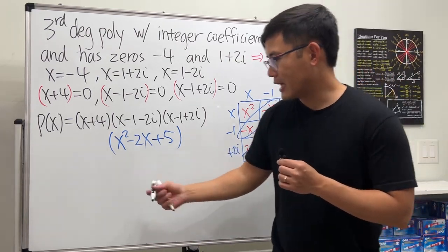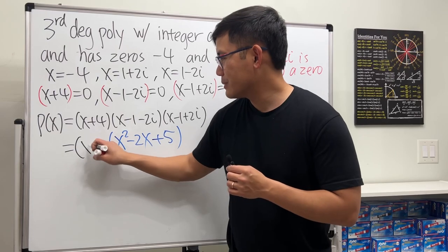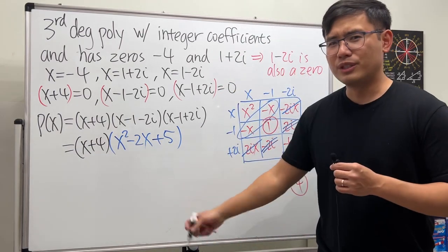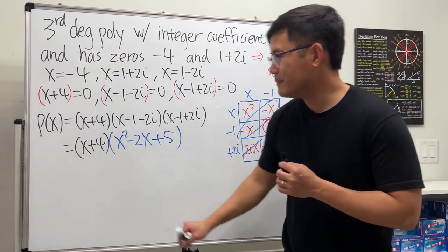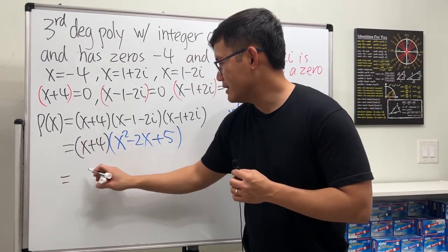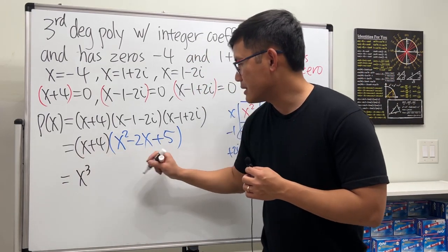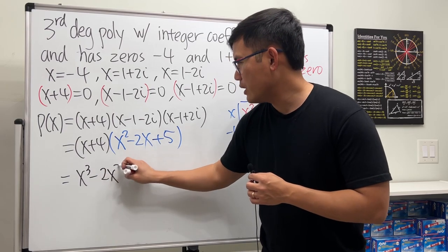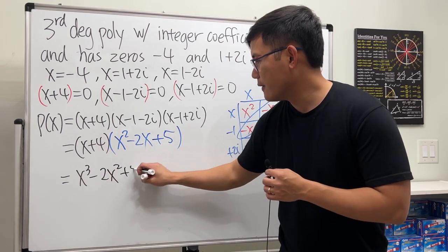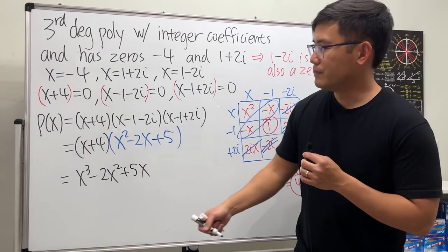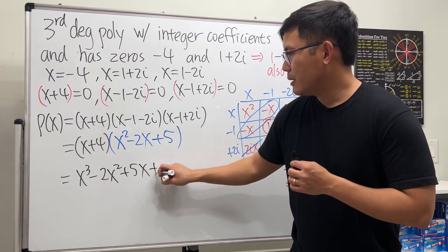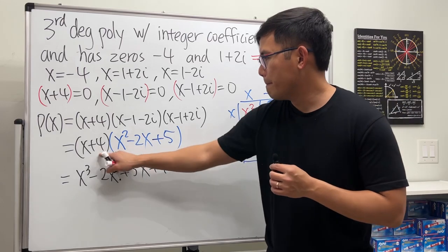Now we can come back here and put down (x+4) in front. Let me just multiply it out to have the standard form. x times this is x³, x times that is -2x², plus 5x.